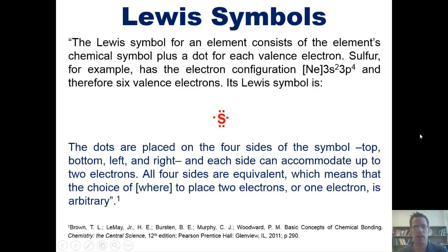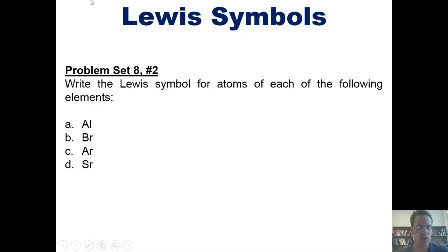So the dots are placed on four sides of the symbol: top, bottom, left, and right, and each side can accommodate up to two electrons. All four sides are equivalent, which means the choice of where to place the two electrons or one electron if you have an unpaired one is completely arbitrary. That takes us then to a question, which I invite you to write the Lewis symbol for atoms of each of the following elements.